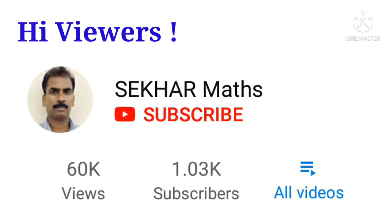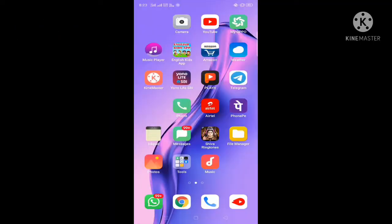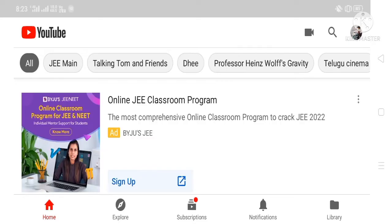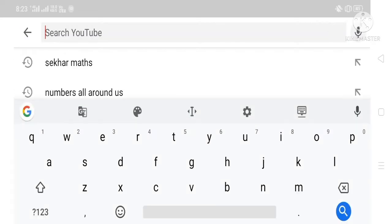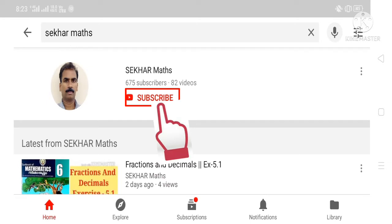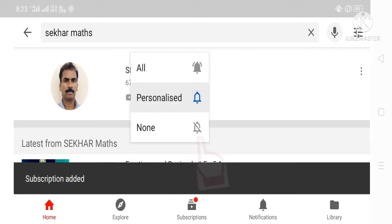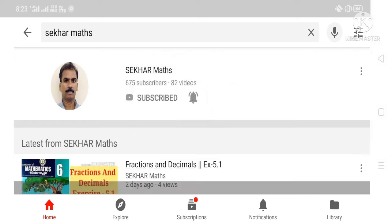Hi viewers, if you don't want to miss any of the videos uploaded by me, please follow these steps on your cell phone. Open YouTube, and in the search box type 'Sekhar Maths'. You will see my photograph in a circle and also a subscribe button. Touch the subscribe button and also touch the bell icon and select 'All'. You will get instant notifications whenever I upload any of my videos.